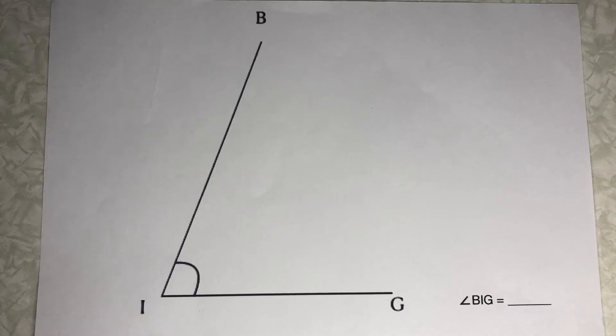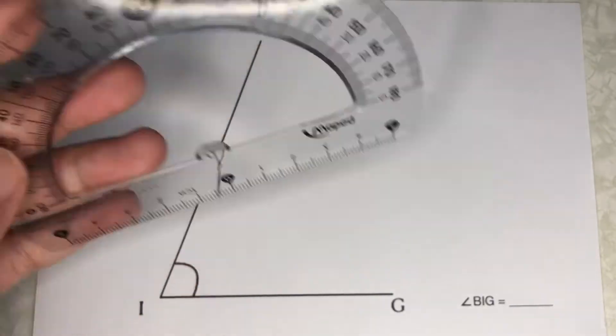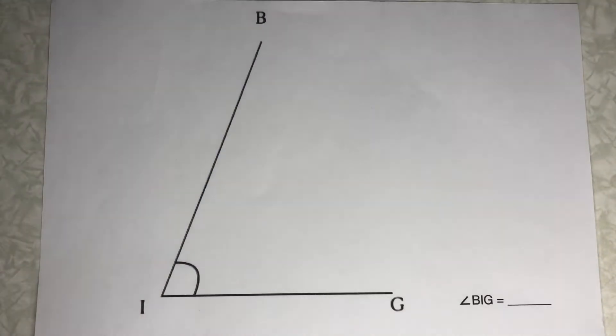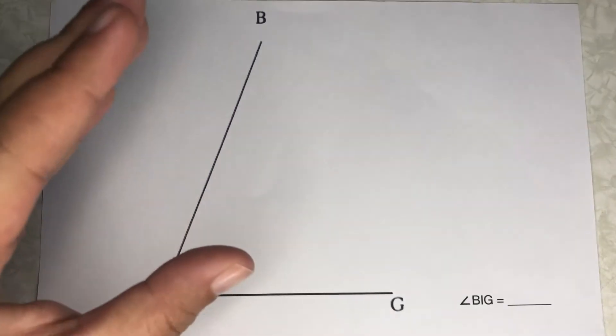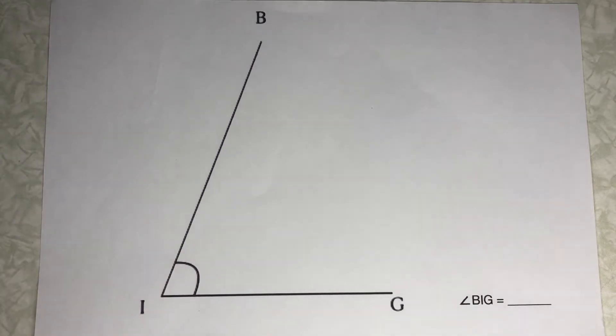Hello there. Today let's learn how to use a protractor in measuring angles. First, look at the angle. We have here angle BIG, and looking at the angle, we have to estimate: is this acute, right, or obtuse? Well, looking at how our angle looks, this is less than 90 degrees.